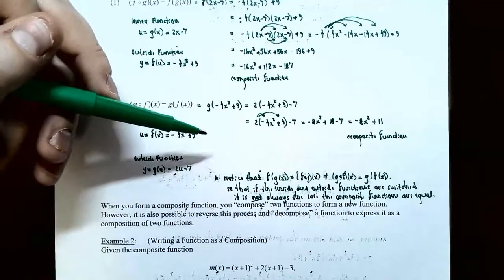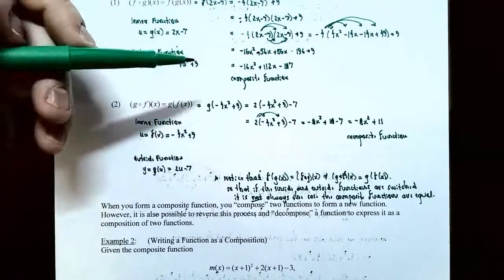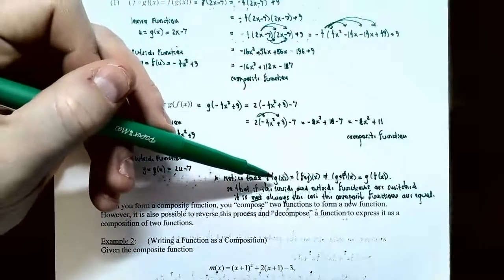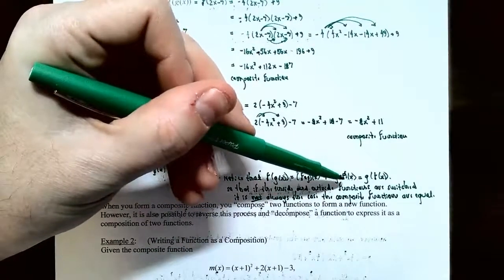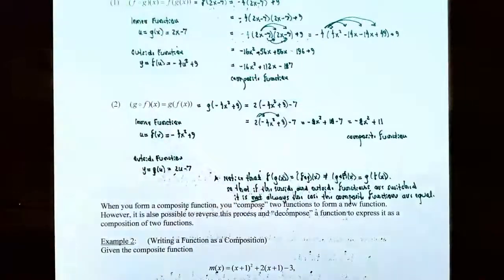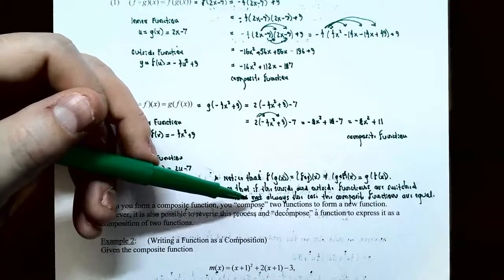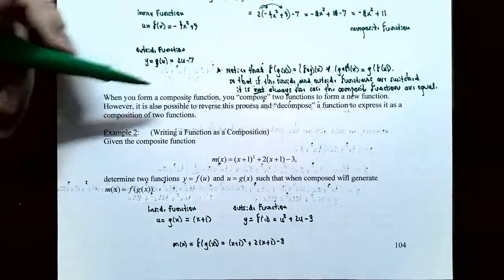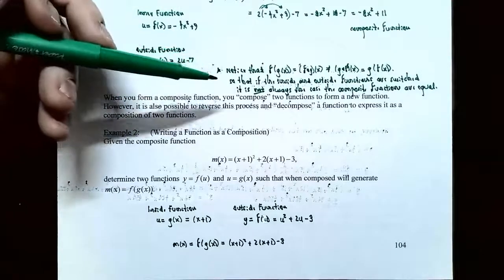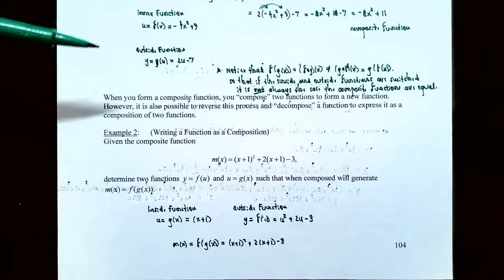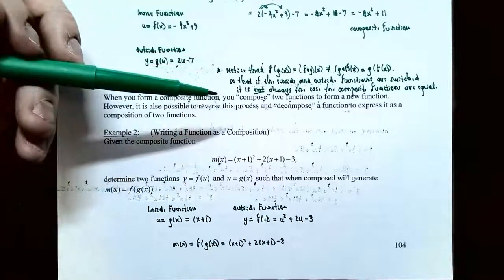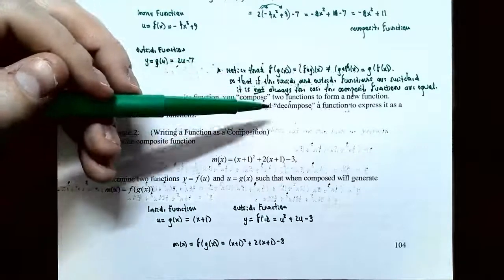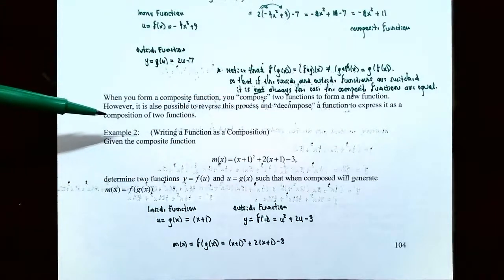Notice that if you reverse the roles of the inside and outside functions, you will not necessarily get the same answer. So f∘g(x) is not the same thing as g∘f(x). When you form composite functions, the operation is called composition. Sometimes you want to reverse this process — say you're given a function and want to find the inside and outside functions. This is called decomposing a function, so that you can express it as a composition of two functions.